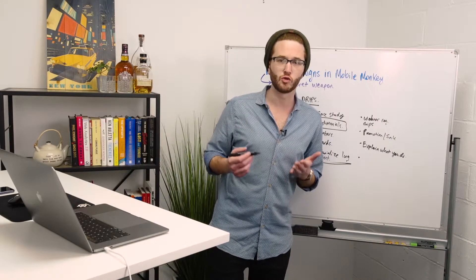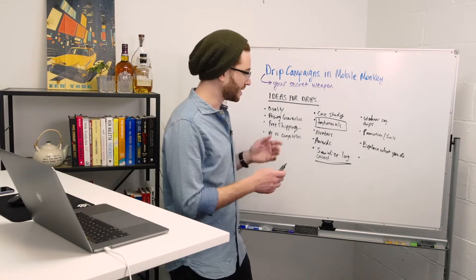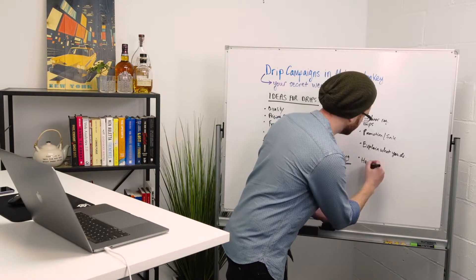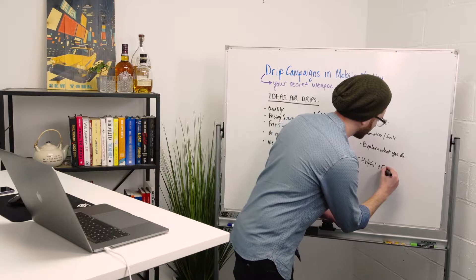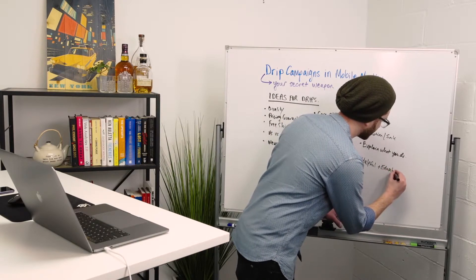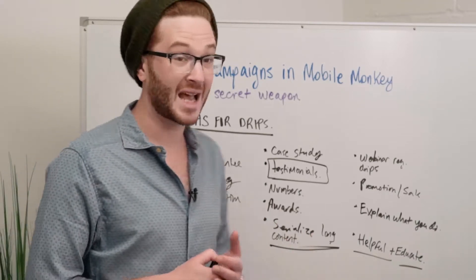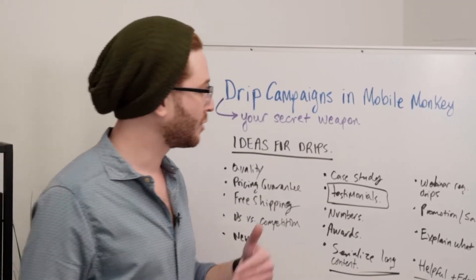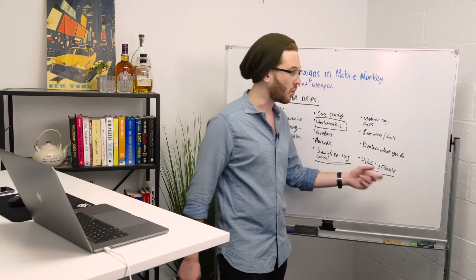Lastly, the two things you really want to keep in mind when building any sort of drip message is to be helpful. Helpful and educate, okay? Notice how I don't say sell. Be helpful and educate. That's how you keep your contacts from unsubscribing and that's how you generate goodwill. That's how you get people to like the messages you get. Educate them with information that they want and that they need.